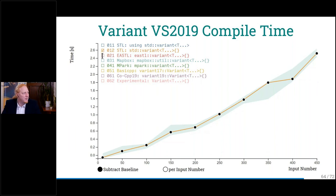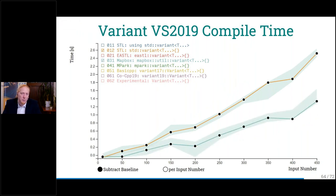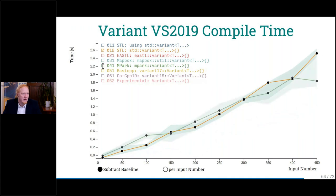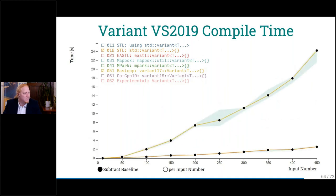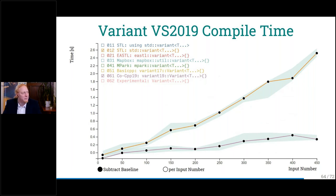Looking at Visual Studio Compiler: EASTL still not very fast — I guess they have an old code base with extra features to work on C++11 or 14. Mapbox again is strong — much faster than the STL version, like half the compile time. Michael Park is about the same as the STL version. Basic CPP — very slow. When I try to get decent compile times, I can get it. There's also an experimental version but it's basically the same as the standard version.